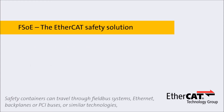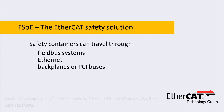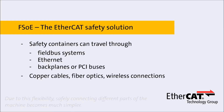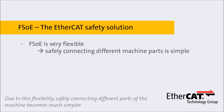Safety containers can travel through field bus systems, Ethernet, back planes or PCI buses or similar technologies, and can make use of copper cables, fiber optics, and even wireless connections. Due to this flexibility, safely connecting different parts of the machine becomes much simpler.